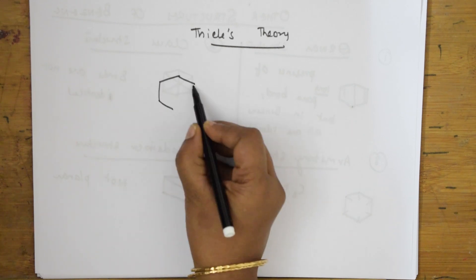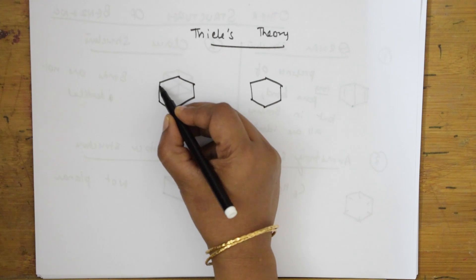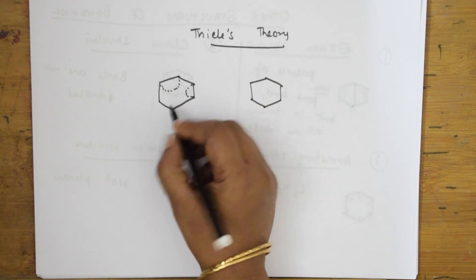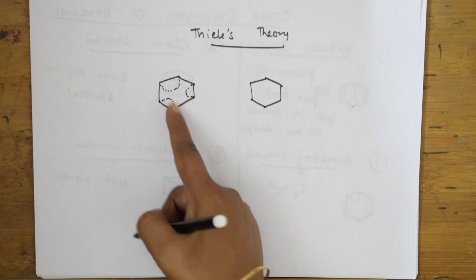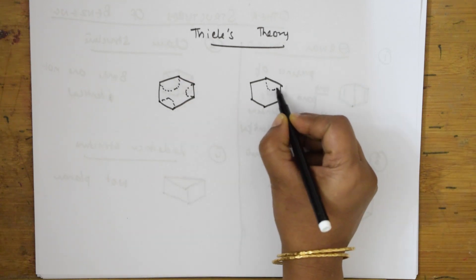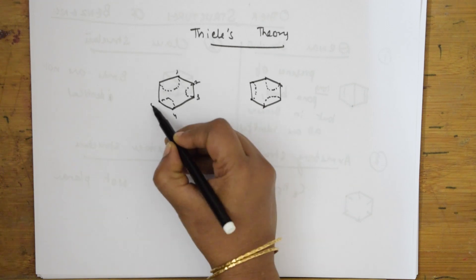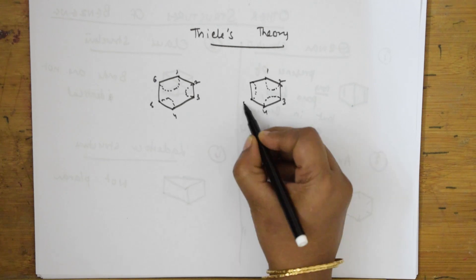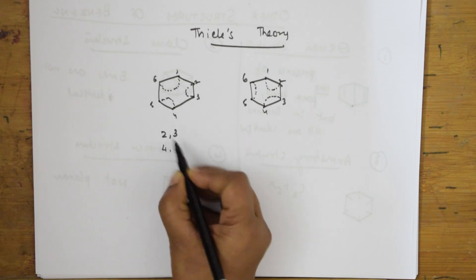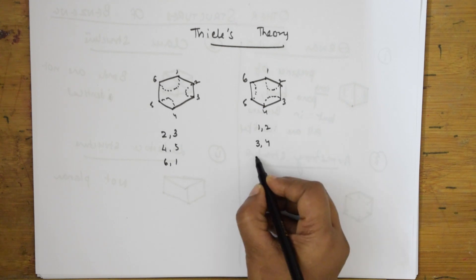He picked up a cyclic hexagonal structure. He drew two benzene rings. In the first one, the free valences are between carbons two and three, between four and five, and between six and one. In the second one, the valences are between one and two, between three and four, and between five and six.